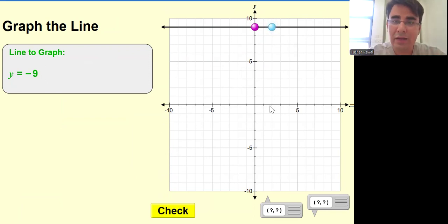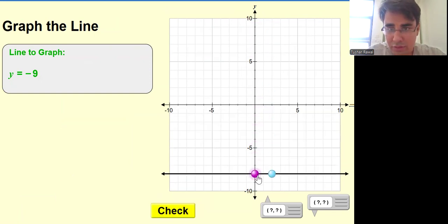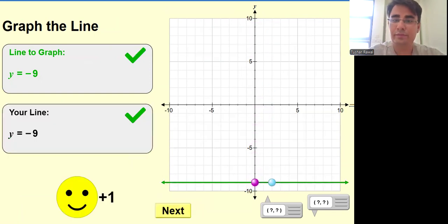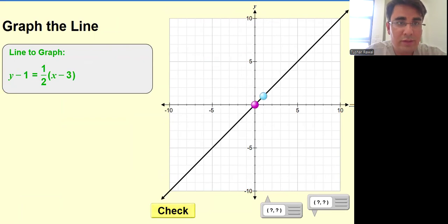So, minus nine, my bad. It should be over here. Sorry, I went to positive nine. Let's move to the next one. So it is in y minus y one form. Okay, so x is three and y is one.